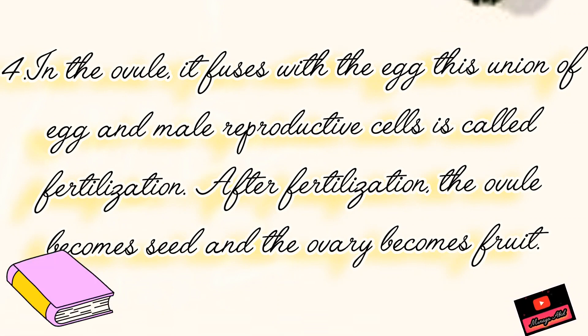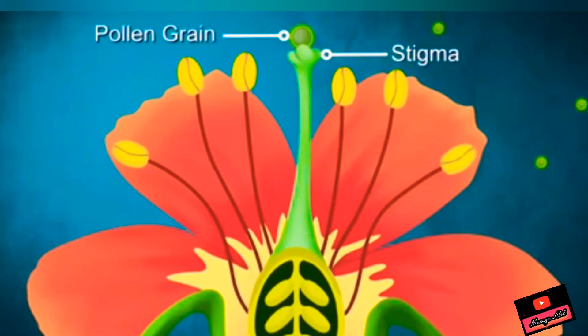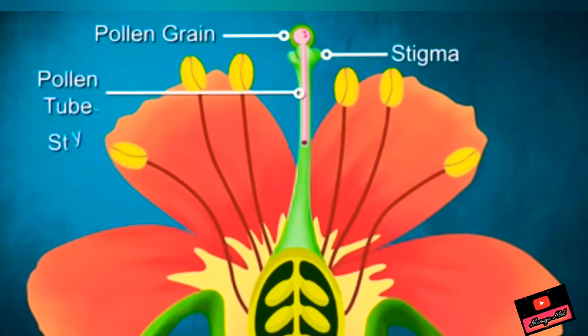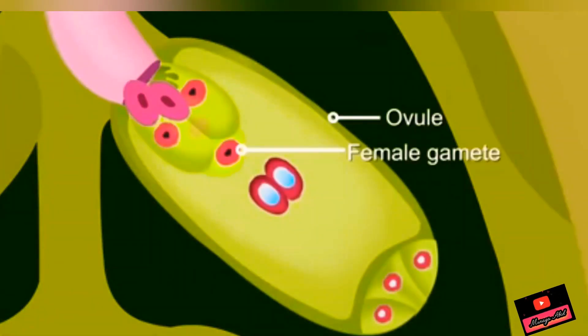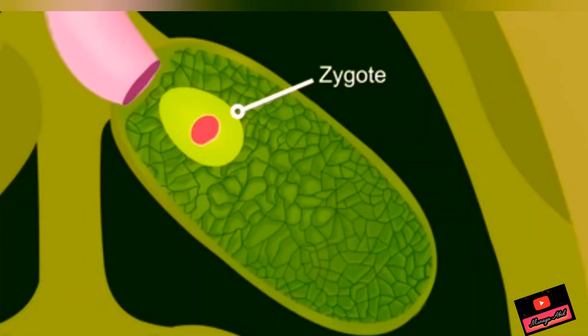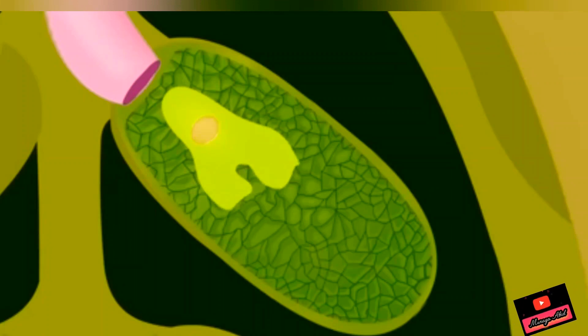Write all four points very neatly in your notebook and learn them as well. Now let's look at the animation. The pollen grain has landed on the stigma and now it will grow. A tube called the pollen tube will rise, pass through the style, and enter into the ovule. From the tip, two nuclei will go — one will fuse with the female gamete and the other will combine with the endosperm. It will form a zygote. This fertilization will result in the formation of a seed. Fertilization is the fusion of male and female gametes.